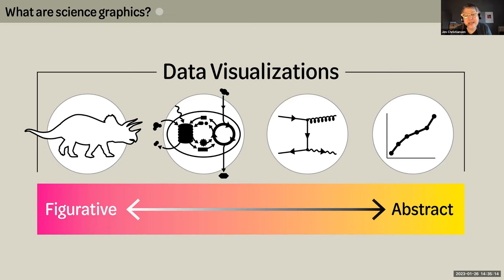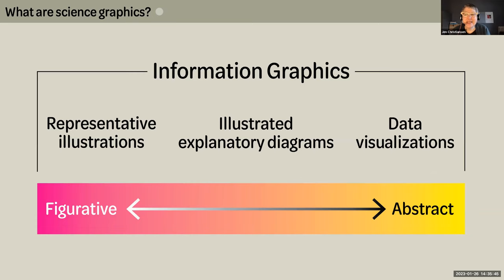Essentially all of the work is rooted in data collection at some stage of the process — from bone length measurements in dinosaur reconstructions, to meticulously documented laboratory experiments that build up a more complete understanding of things like photosynthesis, to representations of mathematical expressions like Feynman diagrams, to straight-up plotting of the raw data itself in chart form. But it's probably more useful in most cases to think of the continuum with representative illustrations at one end, data visualizations on the other, and illustrated explanatory diagrams in the middle.